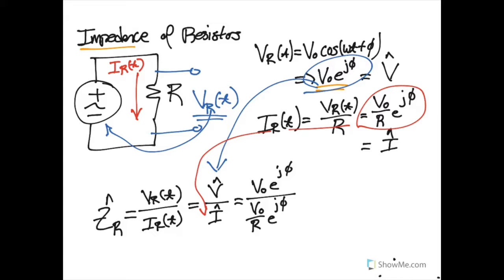And as you might not be surprised to find out, a resistor really doesn't have that complicated behavior, because all of these terms eventually cancel out, and the impedance of a resistor is simply just its resistance.